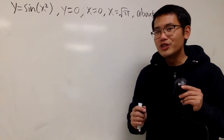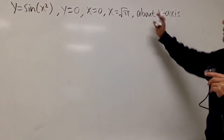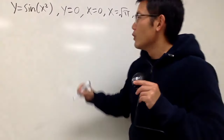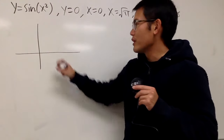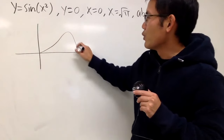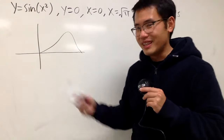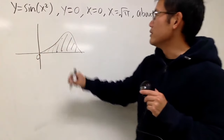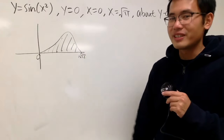We are going to find the volume generated by rotating the region bounded by these equations about the y-axis. Let's graph sin(x²). It's kind of like sin but the hill is a little bit more upward. Use a graphing calculator if you like. When x is 0, y is 0. When x is √π, y is also 0.